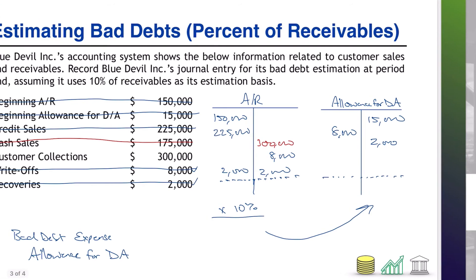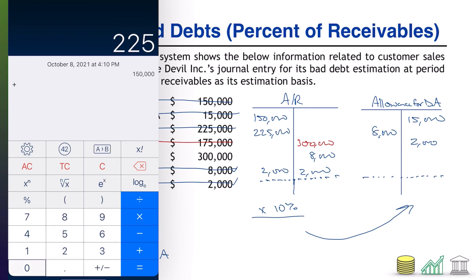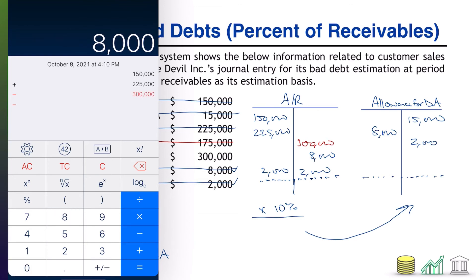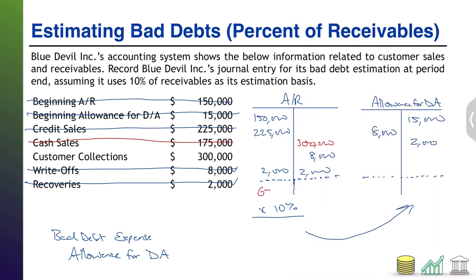In this case, bringing out my calculator: we had $150,000 in AR plus $225,000 minus $300,000 minus $8,000 — we don't have to deal with the $2,000s because they're offsetting. That gives us AR of $67,000. If we estimate that 10% of our AR is uncollectible, that means we need $6,700 in our allowance account.